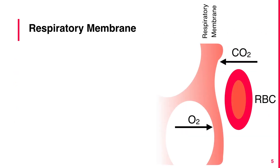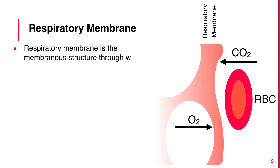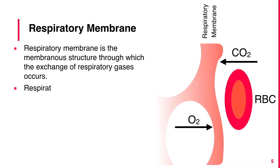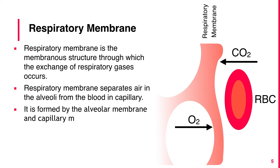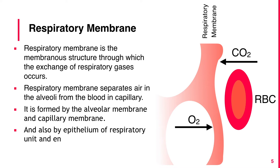The respiratory membrane is the membranous structure through which the exchange of respiratory gases occurs. It separates air in the alveoli from the blood in the capillary. It is formed by the alveolar membrane and capillary membrane, and also by the epithelium of the respiratory unit and the endothelium of the pulmonary capillary.